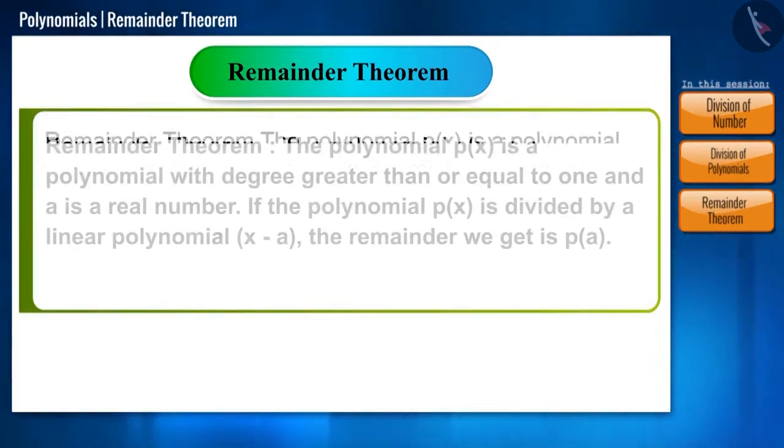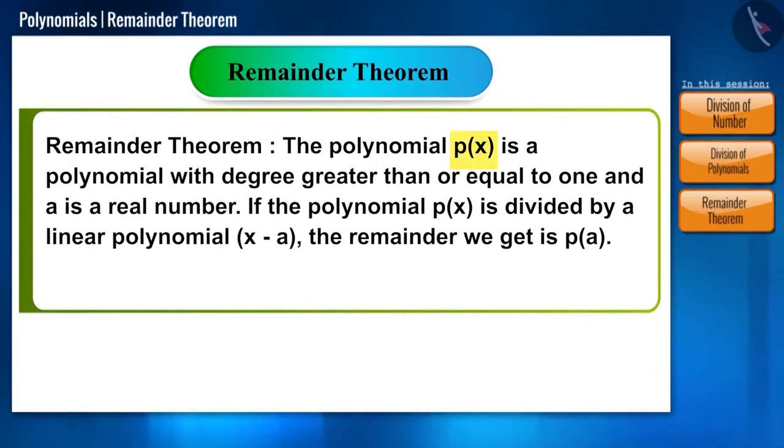Let's assume p of x is a polynomial with degree greater than or equal to 1 and a is a real number. If the polynomial p of x is divided by a linear polynomial x minus a, the remainder we get is p of a.